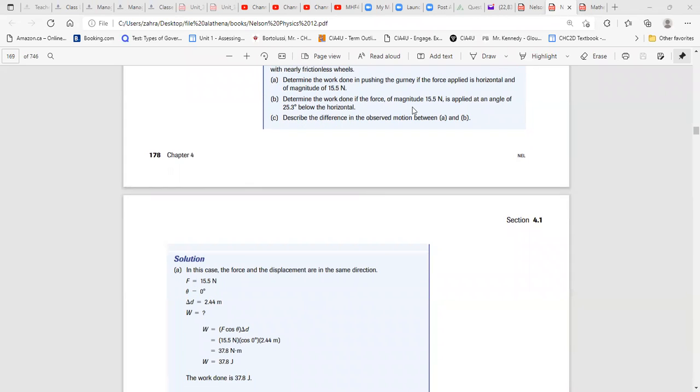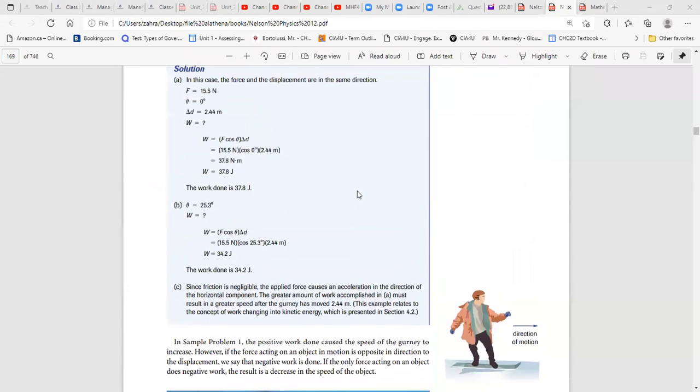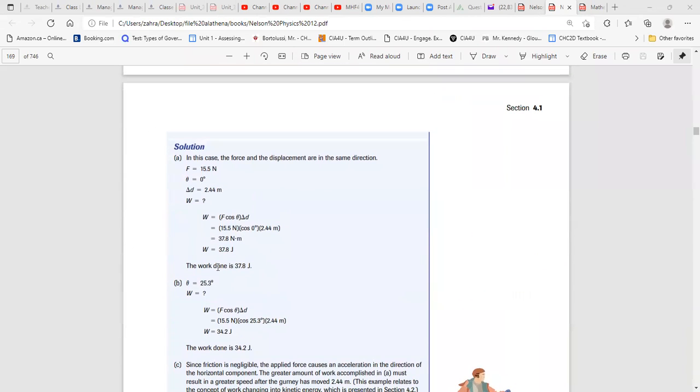Determine the work done if the force magnitude of that. I apply the angle 25.3 below the horizontal. So below the horizontal means the angle between the forward that is moving and the force is 25.3. Again, you need to just put the force magnitude of 25.3. The displacement is the same. So you just calculate that.